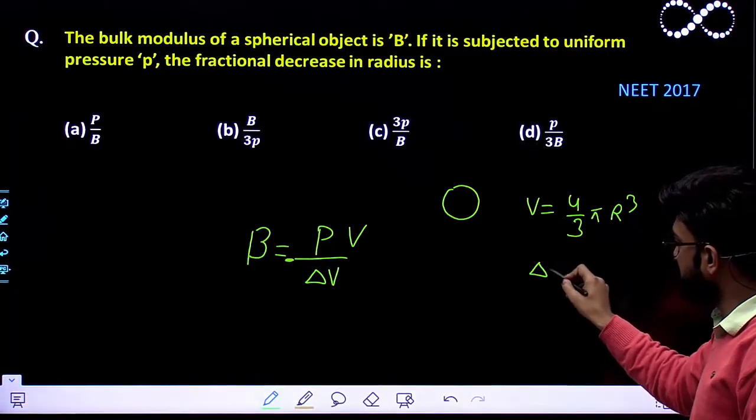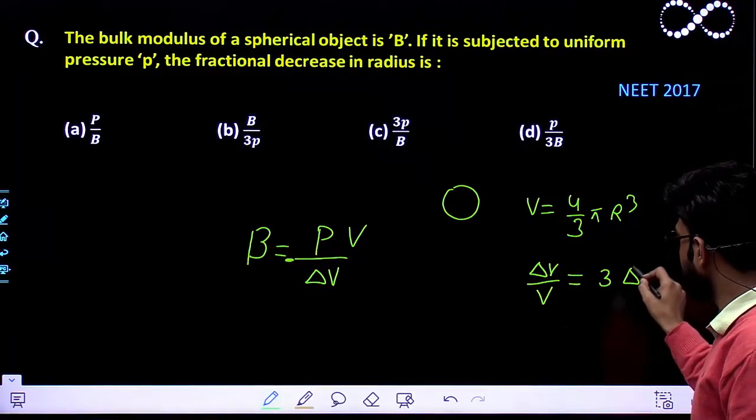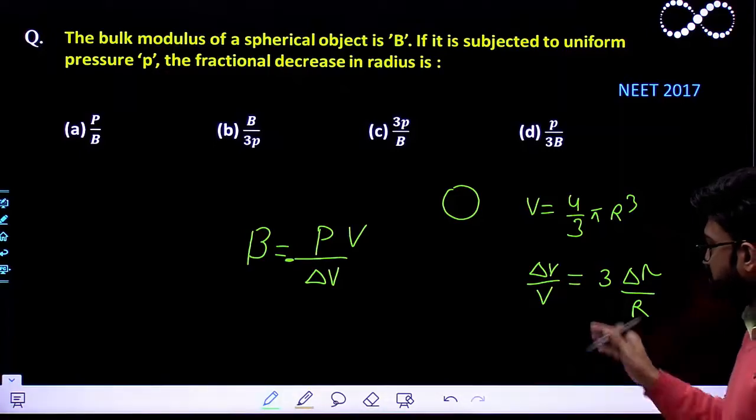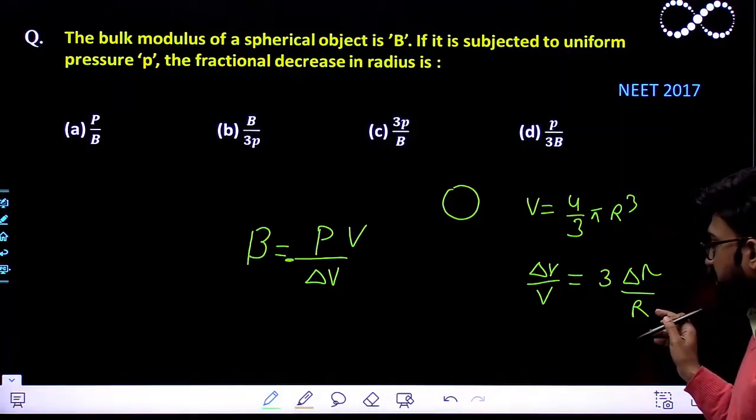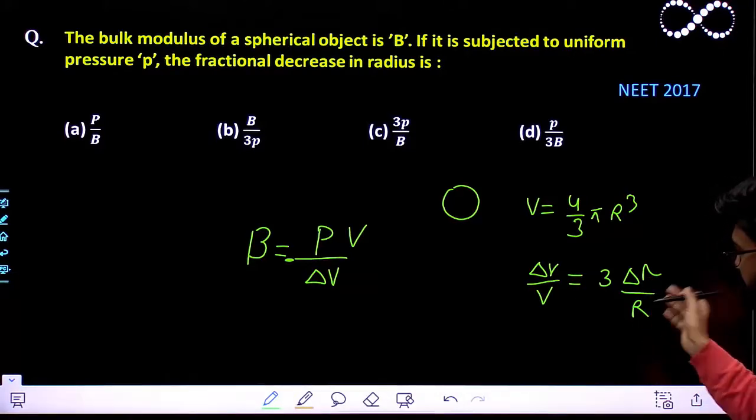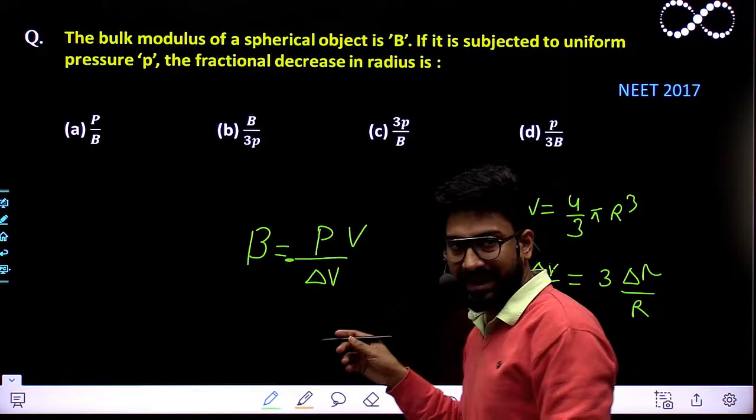So the change in volume del V by V is given by the expression 3 times del R by R. From using this equation you can easily find out the value of fractional change in volume, which is related to fractional change in radius. So we will be putting its value in it so that we can easily get the magnitude of pressure.